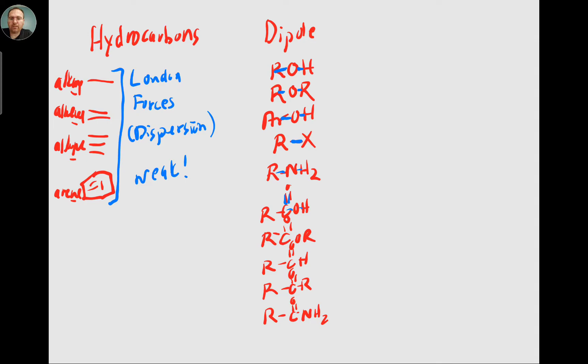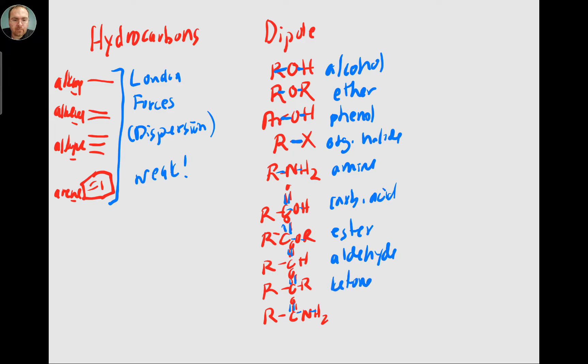Carbon single bond oxygen, single bond to hydrogen to oxygen, yes. All these carbonyls are going to be dipoles. It's just that acids have more, esters have a little bit more, and amides definitely have more. So ethers together, phenols, organic halides, amines, carboxylic acids, esters, aldehydes, and ketones, and then amides. All have dipoles. All have strength.